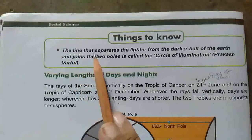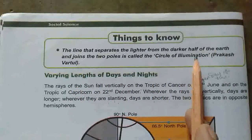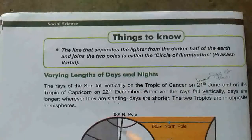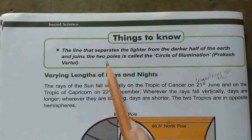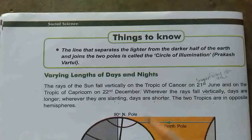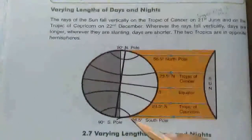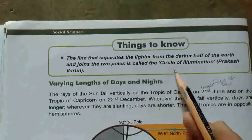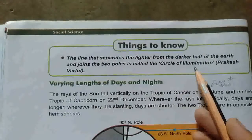The circle of illumination is the line that separates the lighter half from the darker half of the earth, and it joins the two poles — the North Pole and the South Pole. That is known as the circle of illumination.